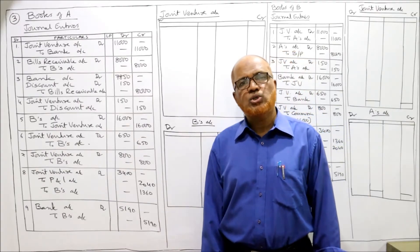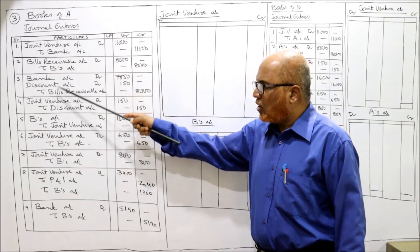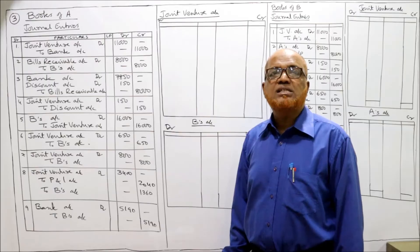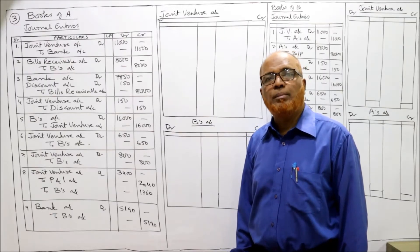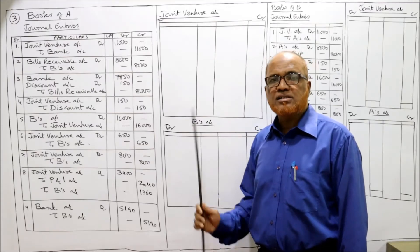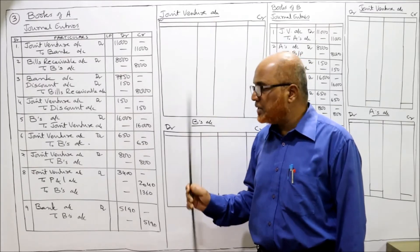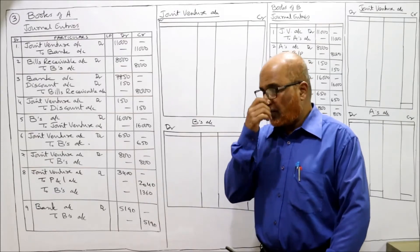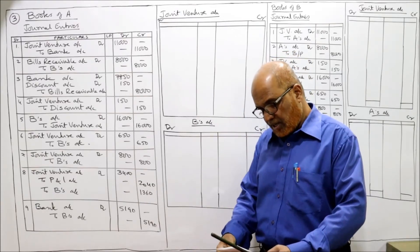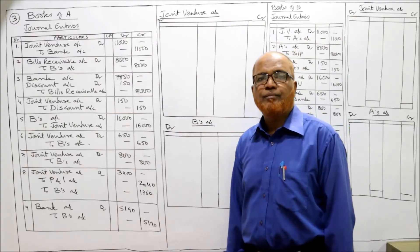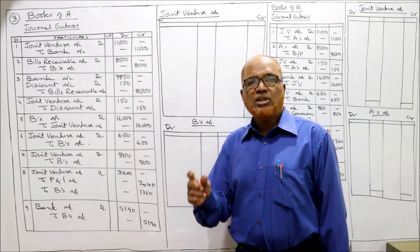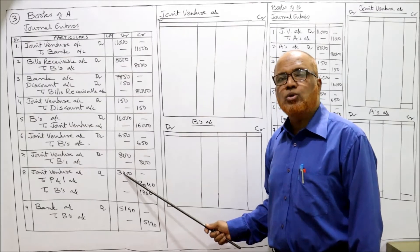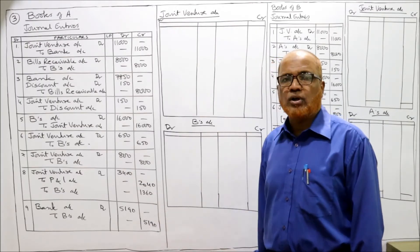Now we find out the profit or loss on joint venture. After posting all these entries, the credit side of Joint Venture Account will be more by rupees 3,400. According to the profit sharing ratio of 3:2, A's share is 3/5 of 3,400 which equals 2,040.